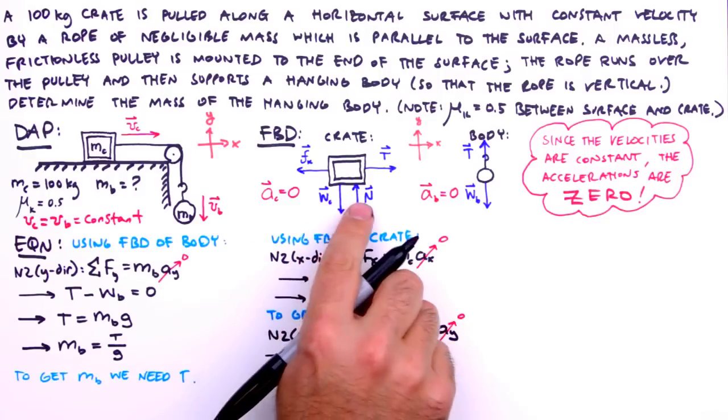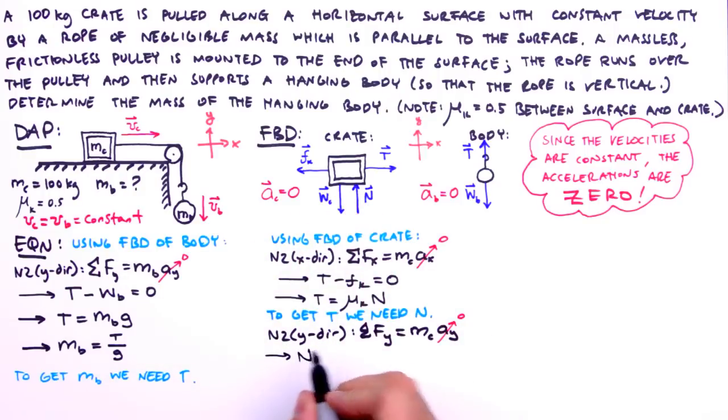Set the acceleration to zero and sum the forces in the y direction. Okay, here we have the normal force in the positive y direction and the weight of the crate in the negative y direction. Set that equal to zero. Next we move the weight to the right and substitute mg for the weight. And now we have an expression for the normal force comprised of known values, m sub c and g.